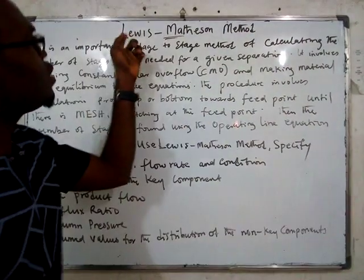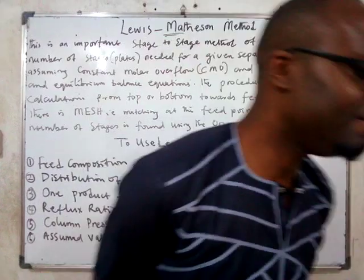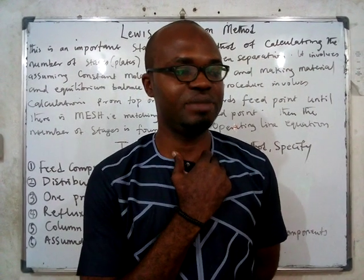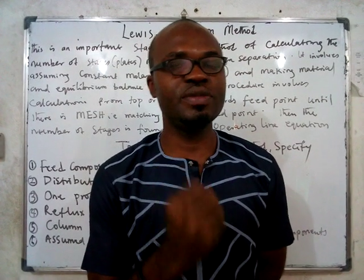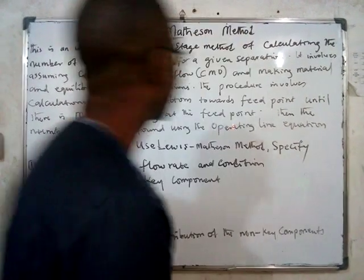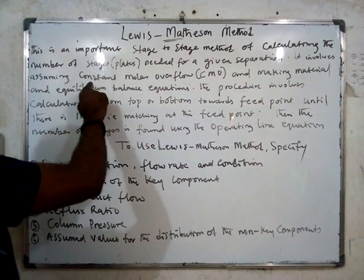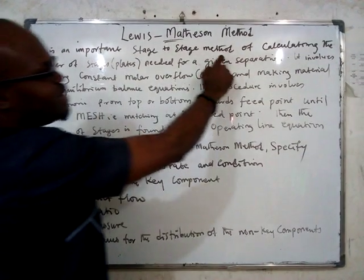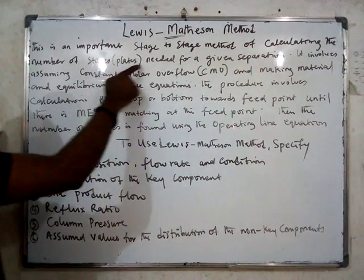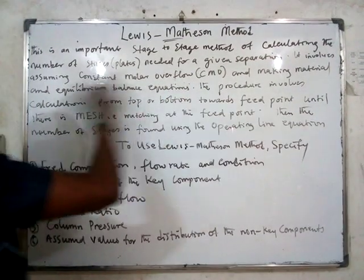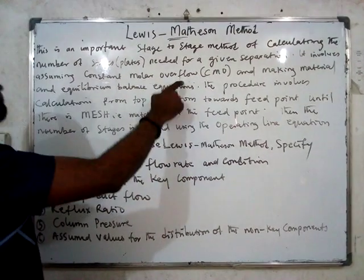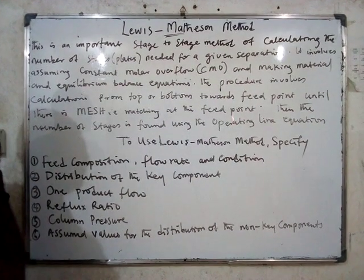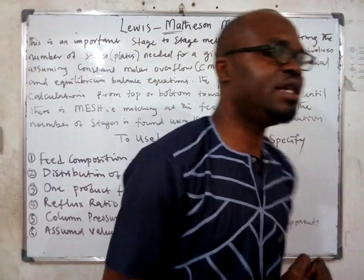One of those methods is what we call the Lewis-Methason method. This Lewis-Methason method is a very important method for solving for the number of stages. It assumes constant molar overflow (CMO). It is a stage-by-stage method for calculating the number of stages or plates needed for a given separation, involving material and energy balance equations.